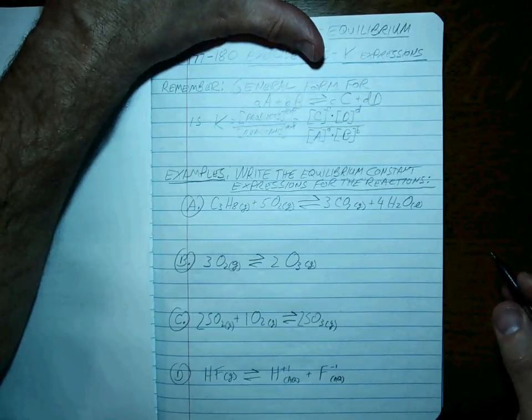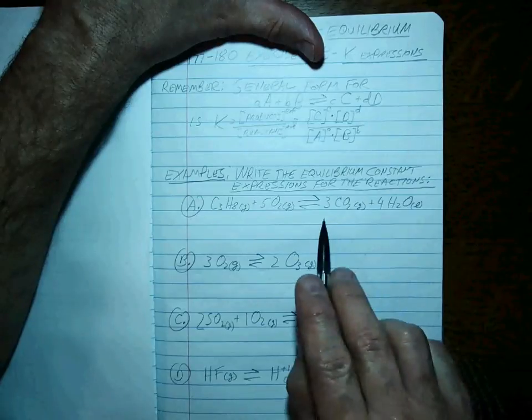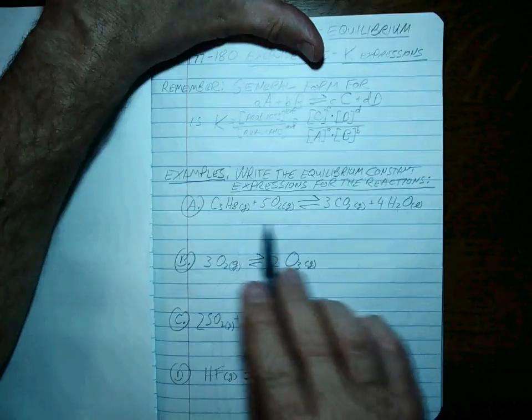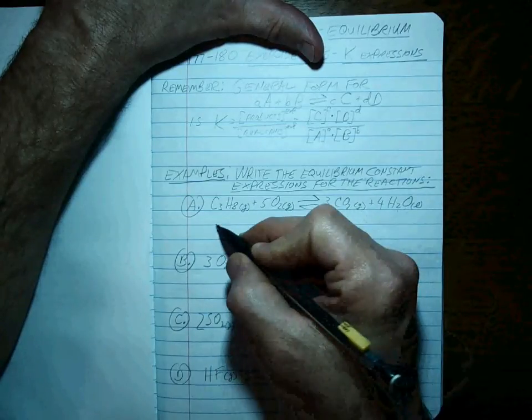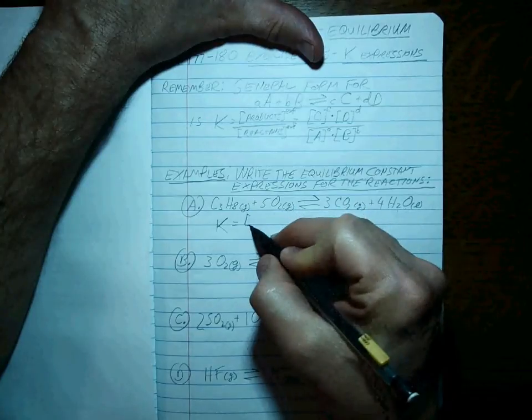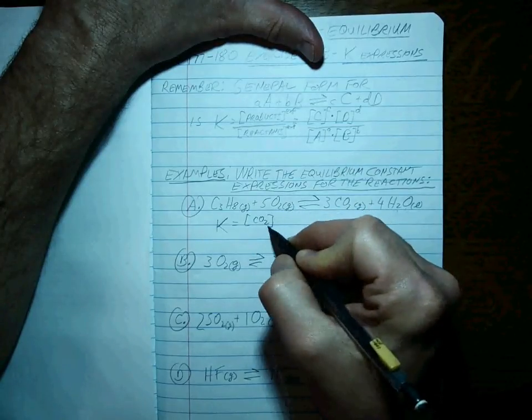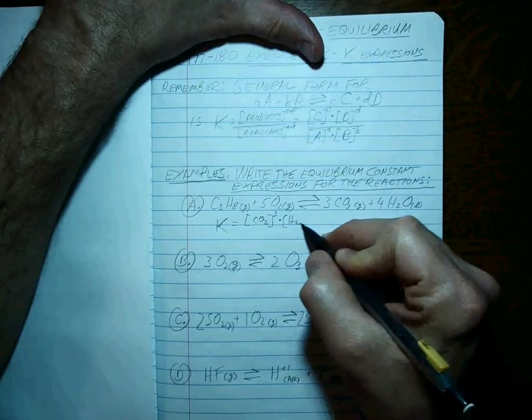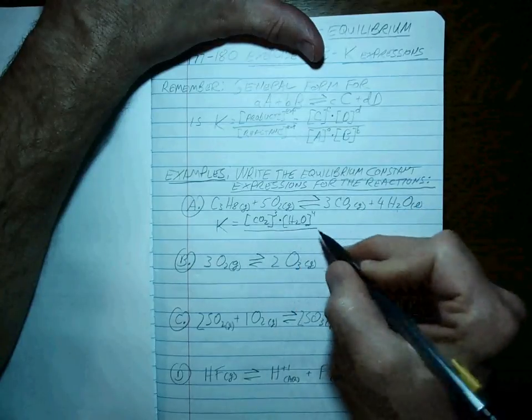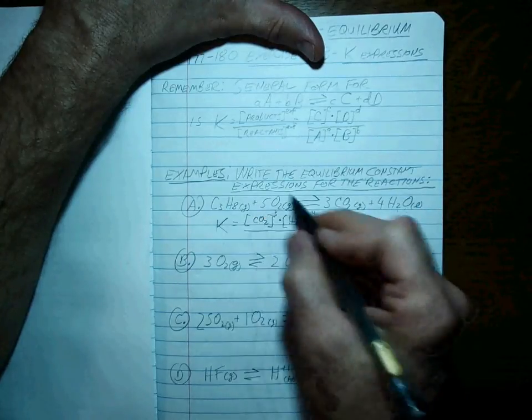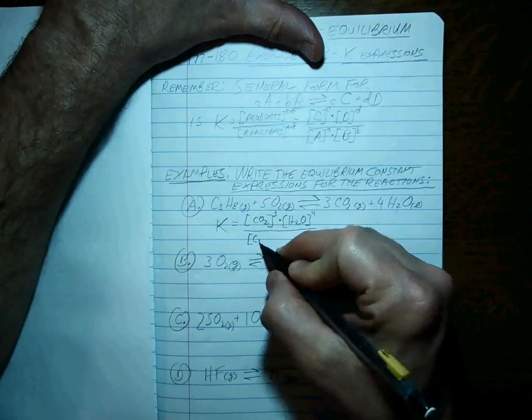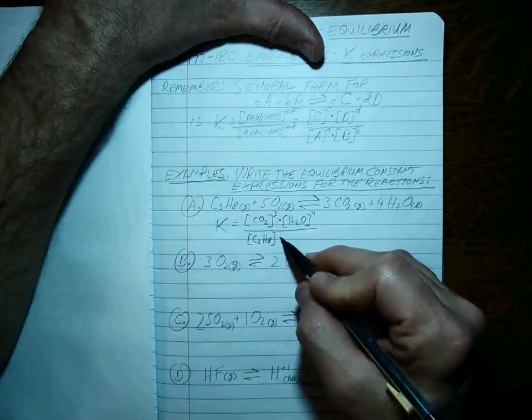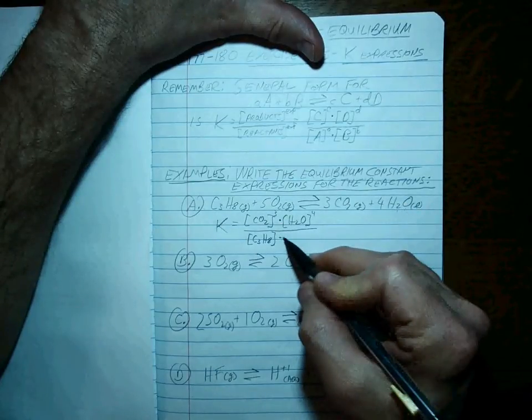Please try to do the work to see if you get it right, because if all you do is watch, you're not going to get anything out of this. Give it a go. Okay, so it's always the concentrations of the products divided by the reactants taken to the powers of their coefficients. So K in this case is going to be the CO2 taken to the third power times the H2O taken to the fourth power divided by the entire reactant side, which is C3H8 taken to the one power, right, times the O2 concentration taken to the fifth.